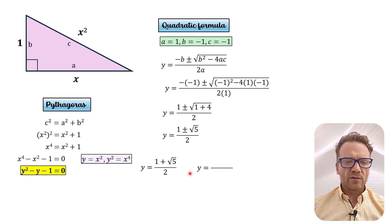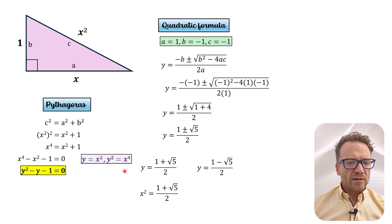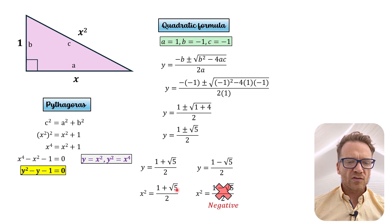1 plus square root 5 over 2 or 1 minus square root 5 over 2. And remember what we said y was? y is equal to x squared. So actually what we're finding out the value of is x squared in this case. And this one over here 1 minus square root 5 would give us a negative value. So again this we would reject. And this value here of x squared equals 1 plus square root 5 over 2. So this would be for x squared.